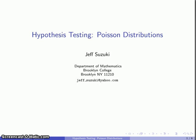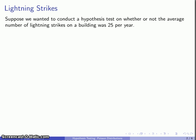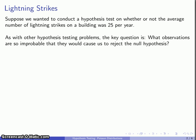Today we're going to look at hypothesis testing when you have a Poisson distribution. For example, suppose I want to know whether or not the average number of lightning strikes in a building is going to be 25 times per year. As with other hypothesis testing, the key question we want to ask is what observations will be so improbable that we would reject the null hypothesis on that basis?